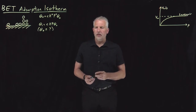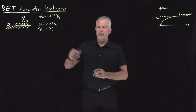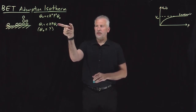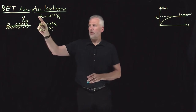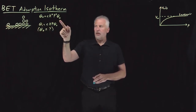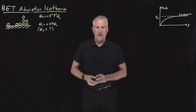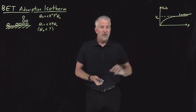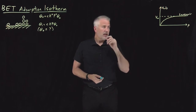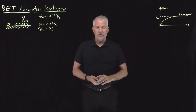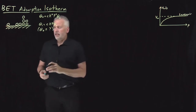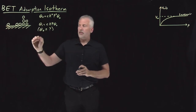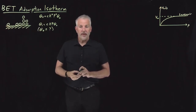We're on our way to understanding the BET model and how it predicts multi-layer adsorption onto surfaces. We can predict how much adsorption there is of molecules on the first layer or into the nth layer in terms of the amount of surface uncovered — the theta naught quantity. We'd really rather know how the volume of a gas adsorbed depends on the pressure in the gas above the surface, so that we can do experimental studies of adsorption.